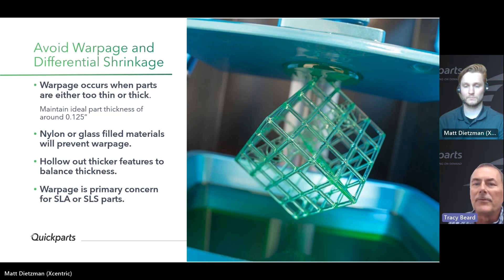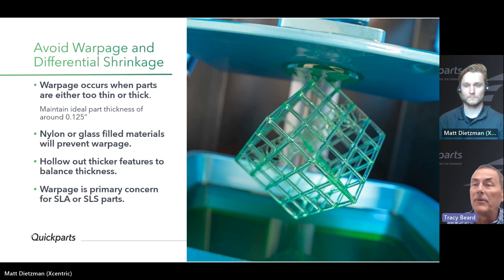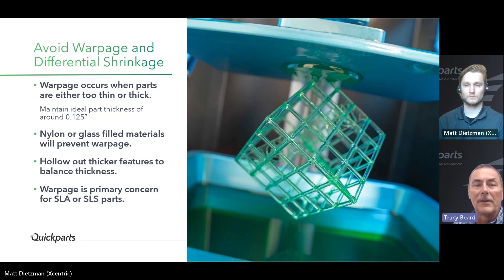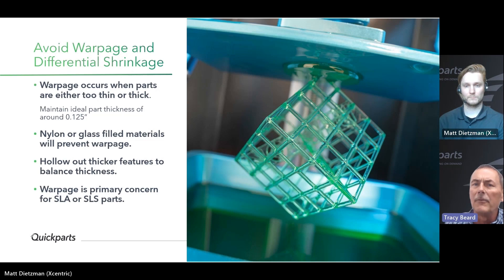Some materials handle warpage and differential shrink better than others. Glass-filled nylon, glass-filled SLS powders, composites, and high-temperature SLA and DLP resins tend to have less warpage and differential shrinkage than resins with lower heat deflection temperatures. The SLS process tends to show more warpage due to the high temperatures parts are exposed to during printing, and DLP parts tend to have a little more differential shrink than other materials.